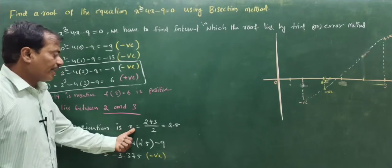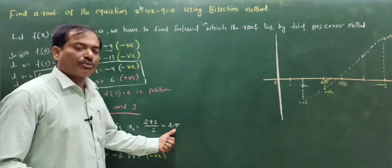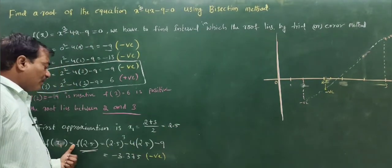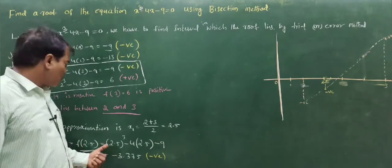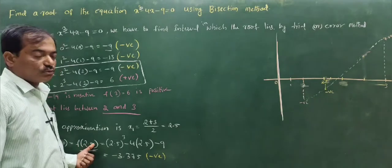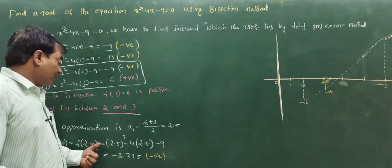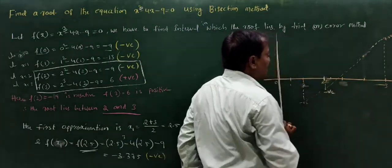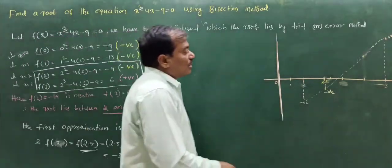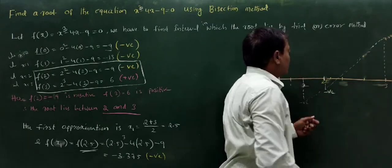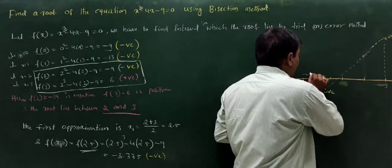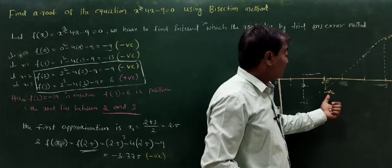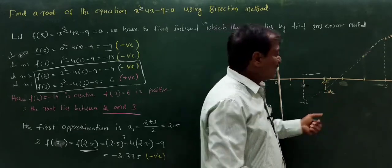The first approximation is x1 = 2.5. We find the function value at this root: f(x1) is not equal to 0, so x1 = 2.5 is not the exact root. The function value at x1 is negative. The interval [2, 3] is divided into two parts. Since f(2) and f(2.5) are both negative, the root does not lie in [2, 2.5] and we delete that interval.